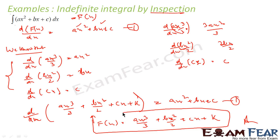So here also I am not using any property of integration as such. I am just using my differentiation knowledge to find the integration. Because integration is nothing but anti-differentiation — the reverse of differentiation. Just by my differentiation experience, since this was ax squared, I knew d/dx of ax cubed by 3 is ax squared. Similarly bx gives bx squared by 2, and c gives cx. So this is the value of F(x).